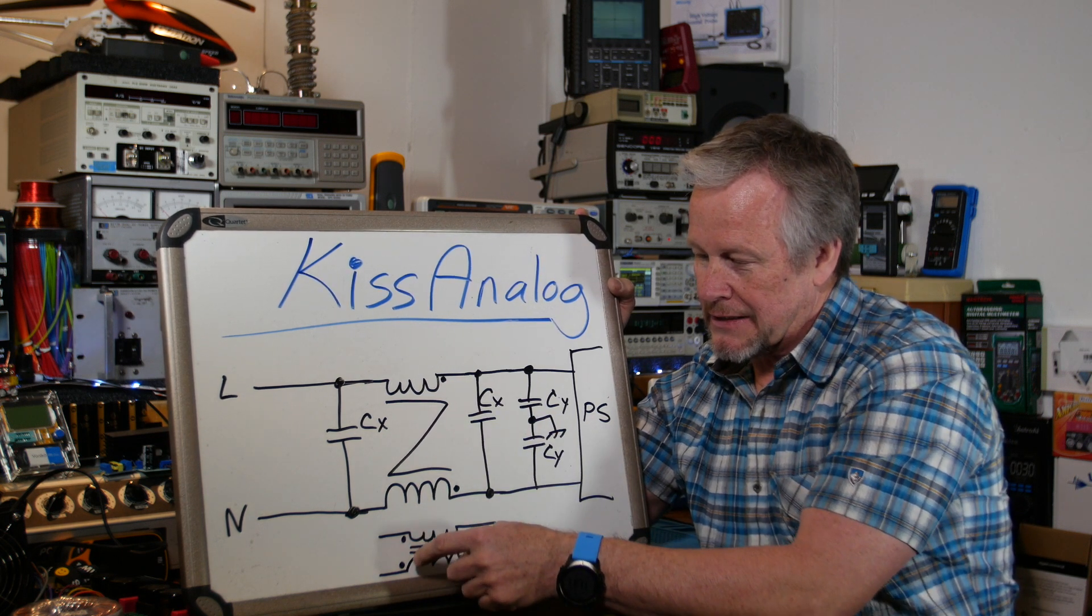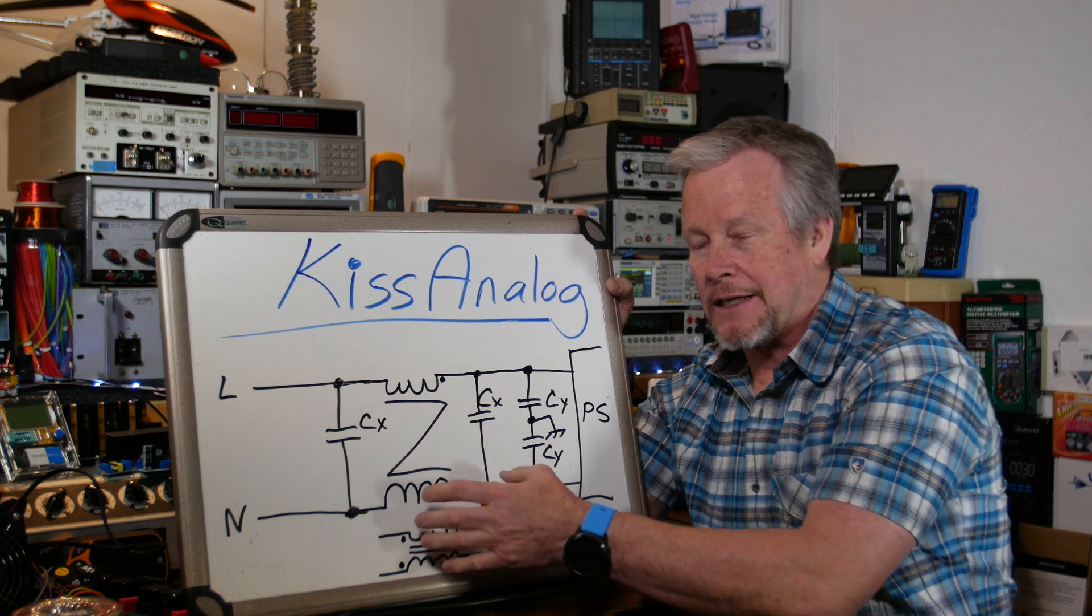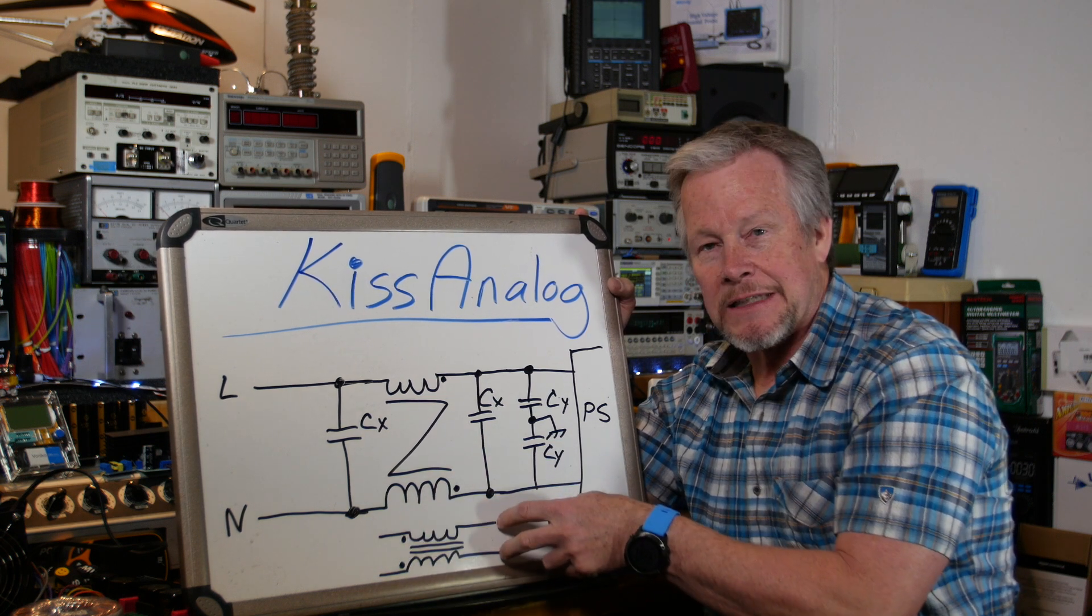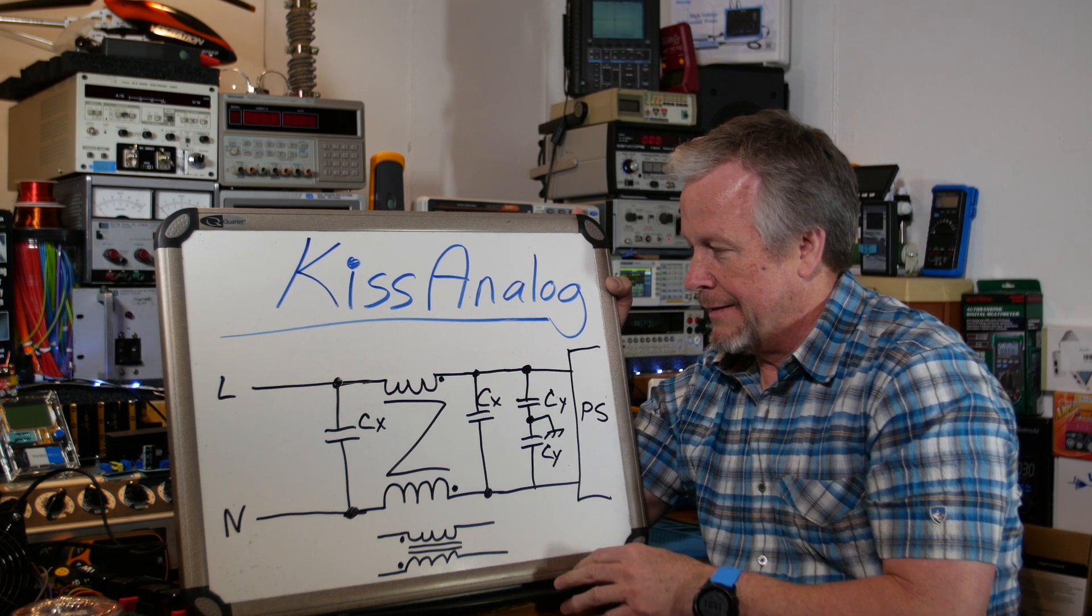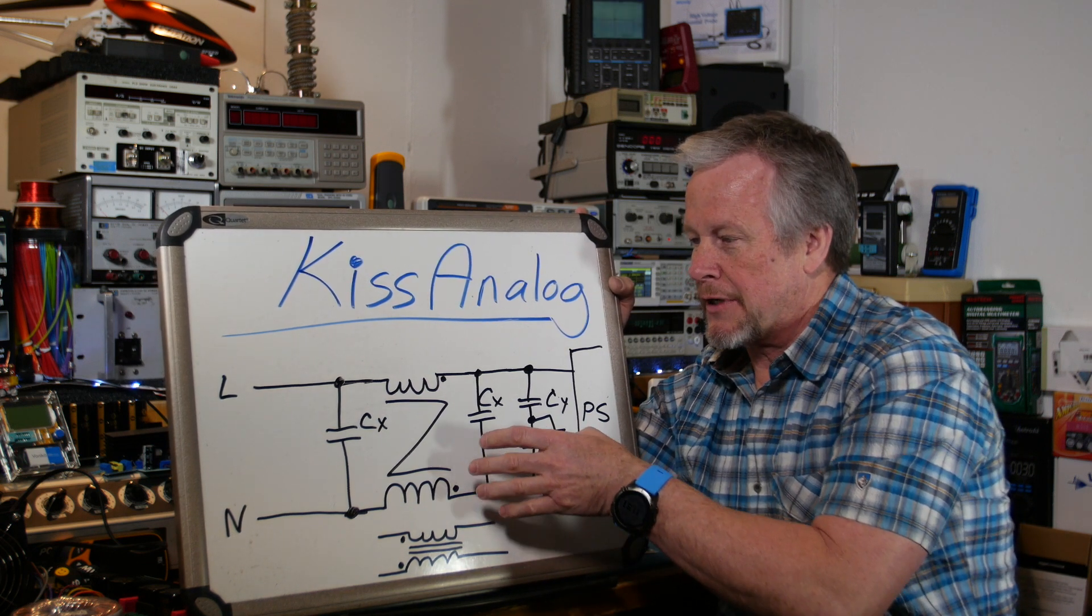Or you could have common mode choke looks like this, dots on this. It doesn't matter what side the dots are on as long as they're both on the same end. And I'll just quickly explain what a common mode choke is because it's kind of a special kind of choke.